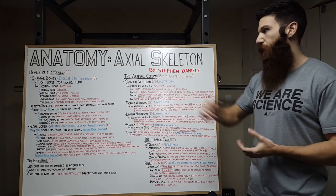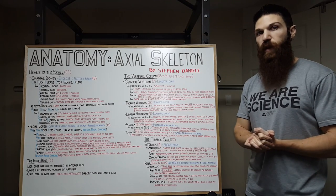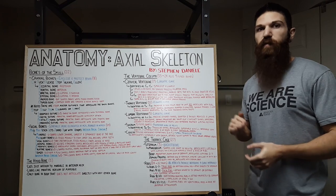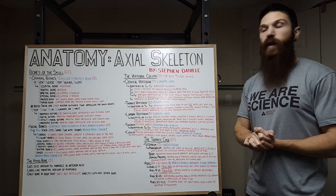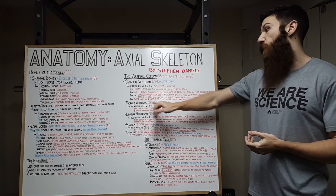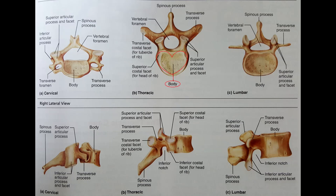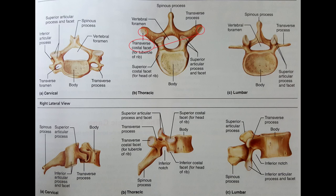Now let's take a look at our thoracic vertebrae. We have 12 total thoracic vertebrae. They begin quite small and get larger the more inferior you travel. They also have a kyphotic curve. Our thoracic vertebrae are identified as T1 to T12, and all will articulate with the ribs. The body has roughly a heart shape and the vertebral foramen is circular shaped. They also have spinous processes that are long and point sharply downward. Our T1 to T10 also have transverse costal facets.